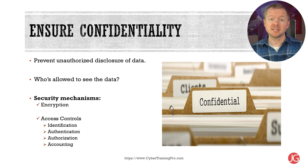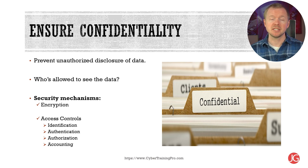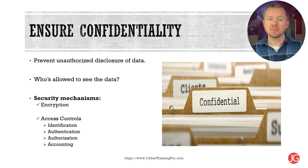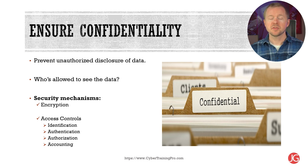With encryption, we essentially scramble the data so that only authorized people can read or understand what the data says. For example, if we had a message that said 'hello world', the encrypted version might be something like AZXYB2FG. We aren't going to dive deep into encryption right now, but we will. Access controls allow us to logically control who has access to data.